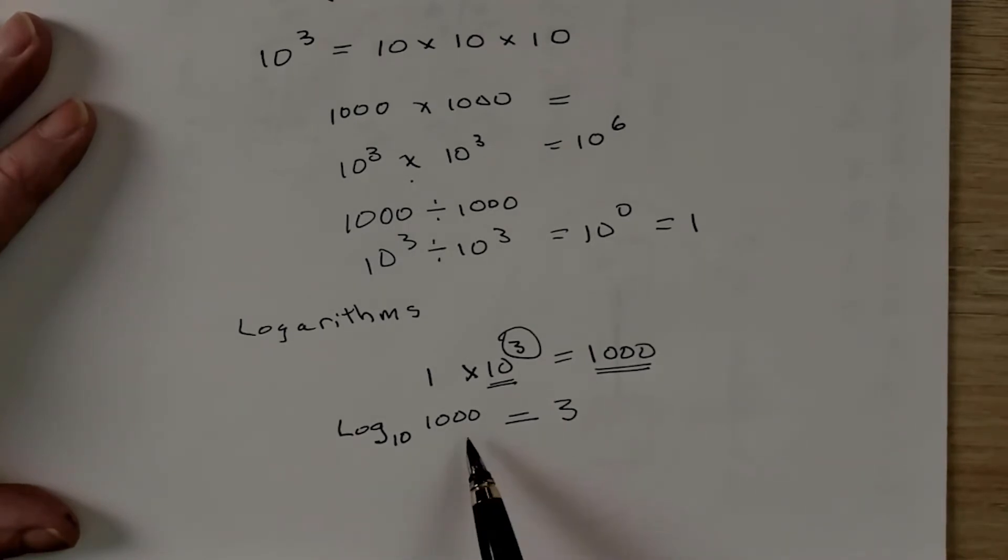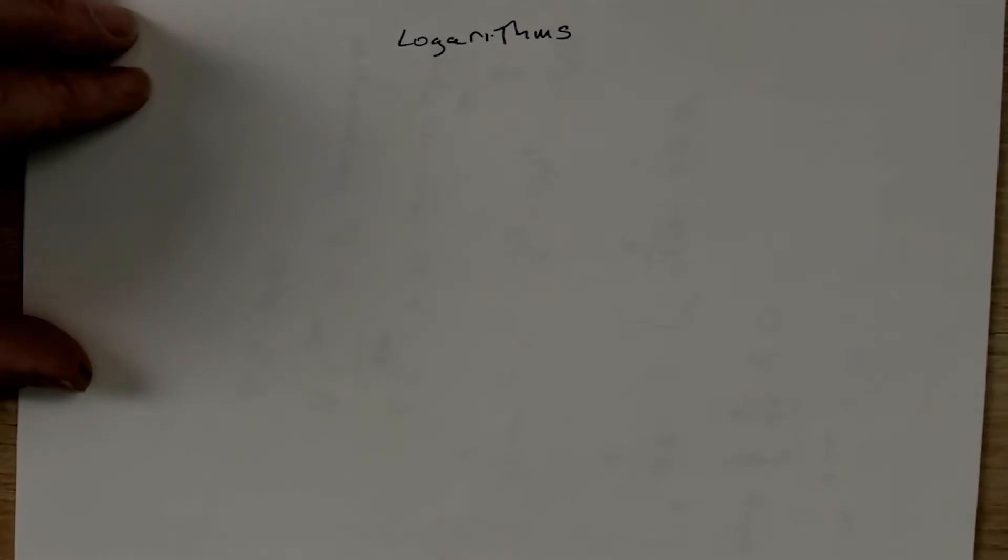So you see, log 10 of 1,000 would equal 3, because 1,000 is 10 raised to the 3 power. Let's quickly look at a couple of rules of logarithms.